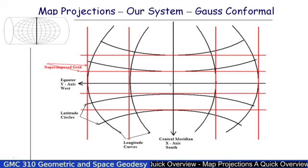So my Westings are negative Eastings, and my Southings are negative Northings. In other words, everything West of the Central Meridian will be negative in the Eastings. And everything South of the equator will be negative in the Northings system.